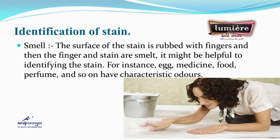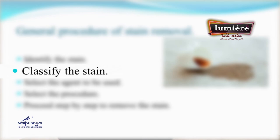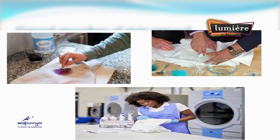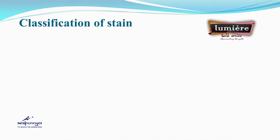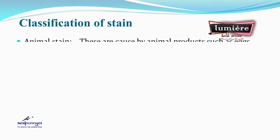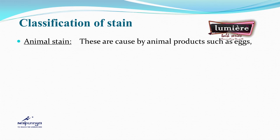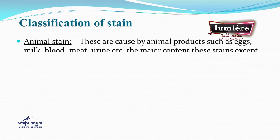Stains can be classified into different categories: animal stain, vegetable stain, grease stain, mineral stain, acidic stain, natural dyes and pigments, synthetic dyes and pigments, and sugar solutions with coloring agent. Animal stains are caused by animal products such as blood, egg, milk, meat, urine, and so on. The major content of these stains, except urine, is protein.